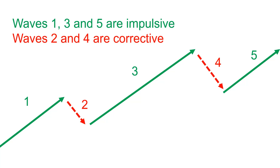Now that can also be the other way around — waves one, three and five can also go down, but then the whole trend would also be going down. In this case the trend direction is up, which is why the impulsive waves one, three and five go up as well. There are two counter waves, waves two and four. They are corrective waves and they basically correct the move of the preceding wave. Wave two corrects wave one, wave four corrects wave three. Because there are three waves to the upside and two waves to the downside the general trend direction is up. Waves one, three and five are impulsive and waves two and four are corrective — and waves two and four are of course weaker than waves one, three and five.